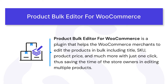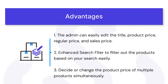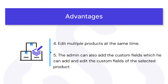With the Product Bulk Editor for WooCommerce plugin, the merchant can easily edit the title, product price, regular price, sales price, and many other product fields. An enhanced search filter is provided to filter products easily. The admin can change product prices for multiple products simultaneously, edit multiple products at the same time, and also add and edit custom fields for selected products.